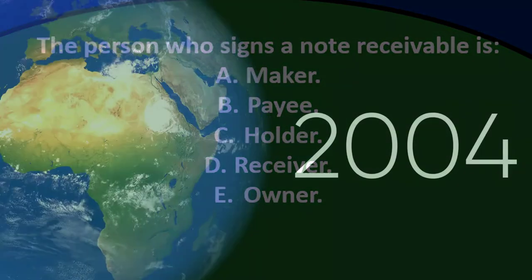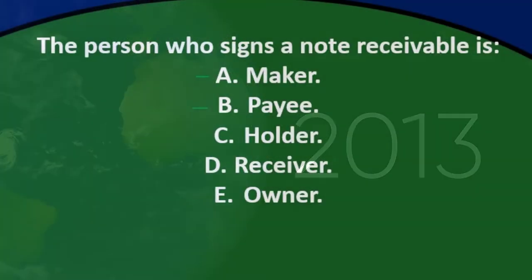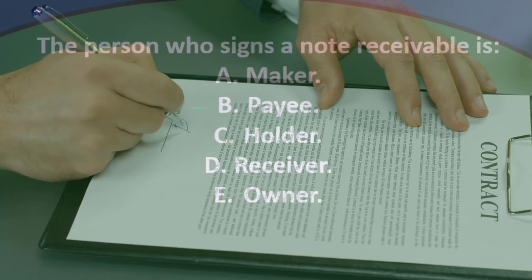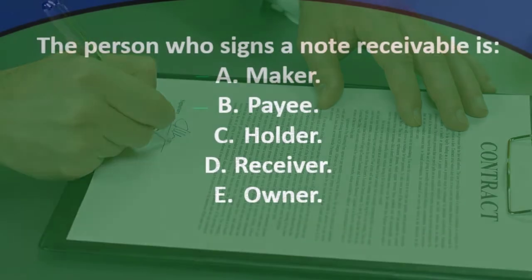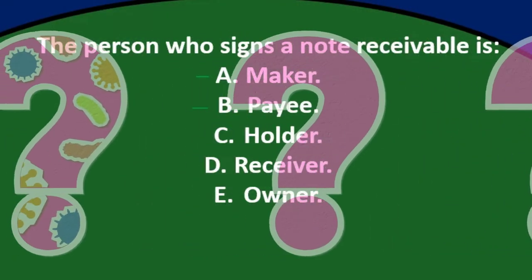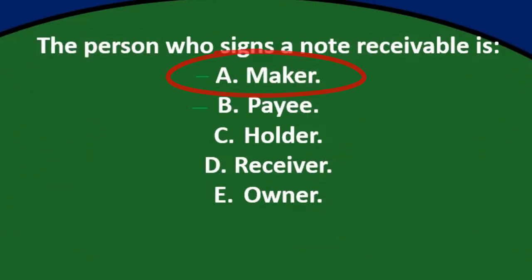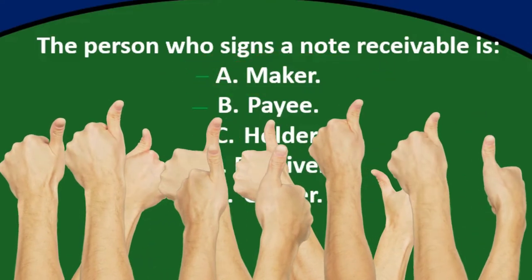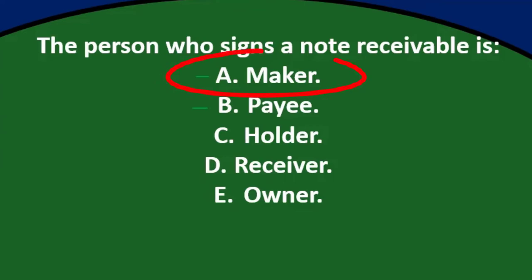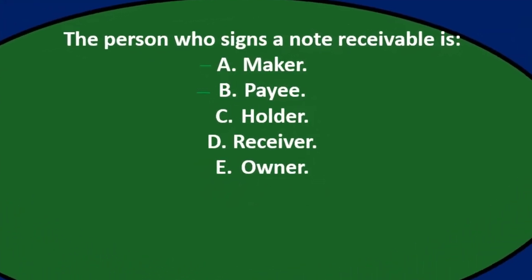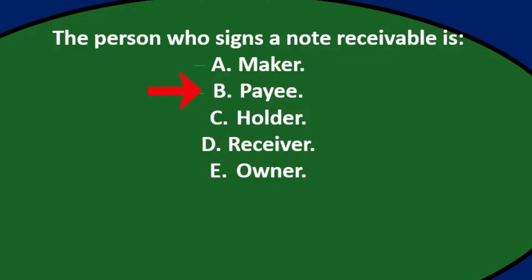So we can imagine if we have a debt that is due and we say 'I'm not going to pay you now, but I'll write a formal note telling you I will pay in the future.' Who's going to sign it? The one who's making it. Option A is the maker — that sounds good. The maker is a technical term for the one who creates and signs the note.